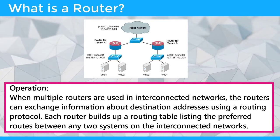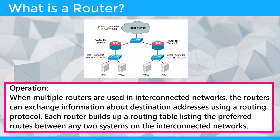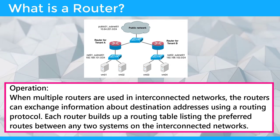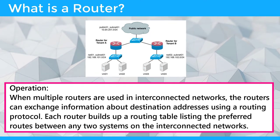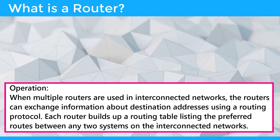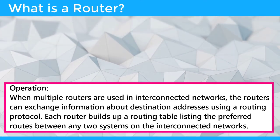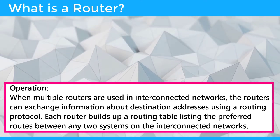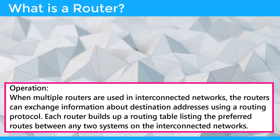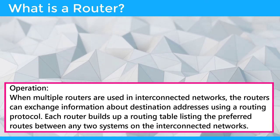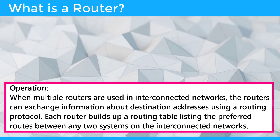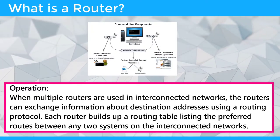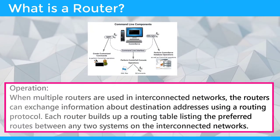When multiple routers are used in interconnected networks, the routers can exchange information about destination addresses using a routing protocol. Each router builds up a routing table listing the preferred route between any two systems on the interconnected networks.